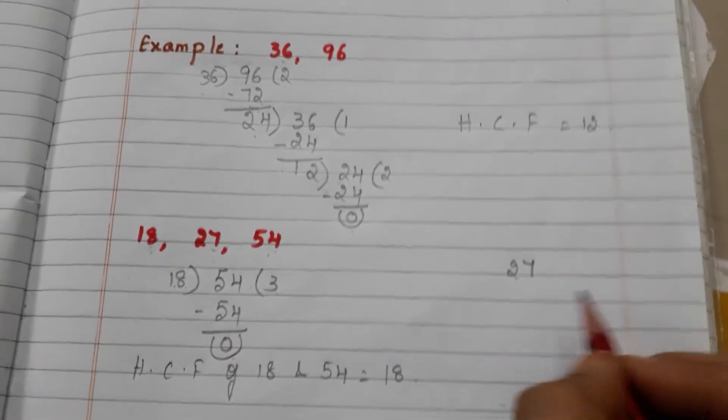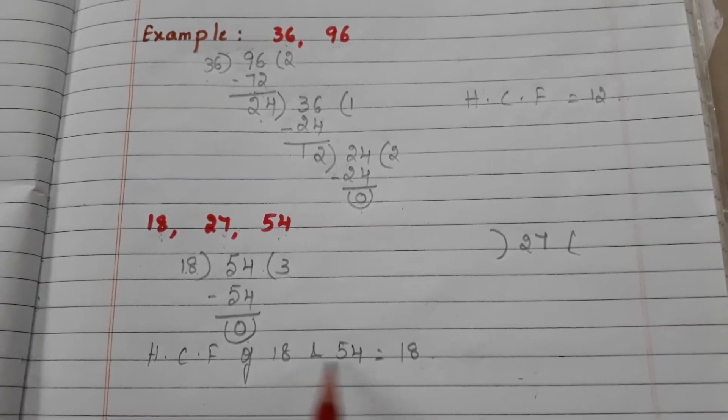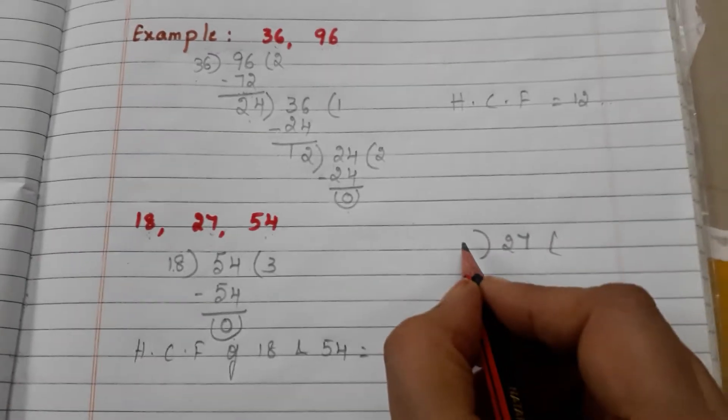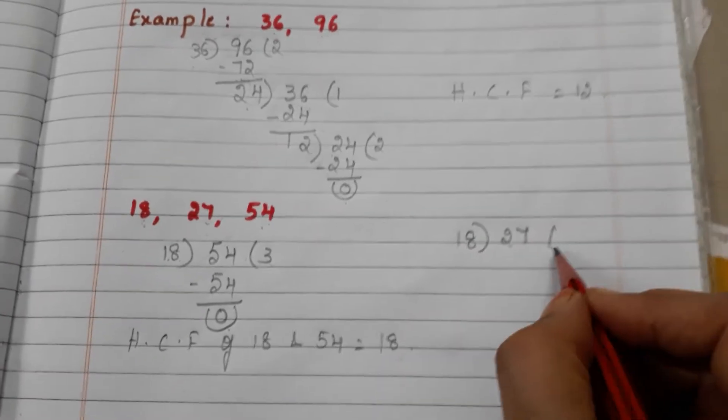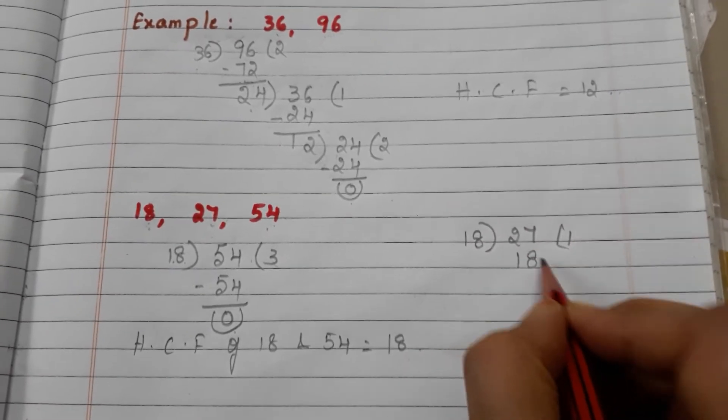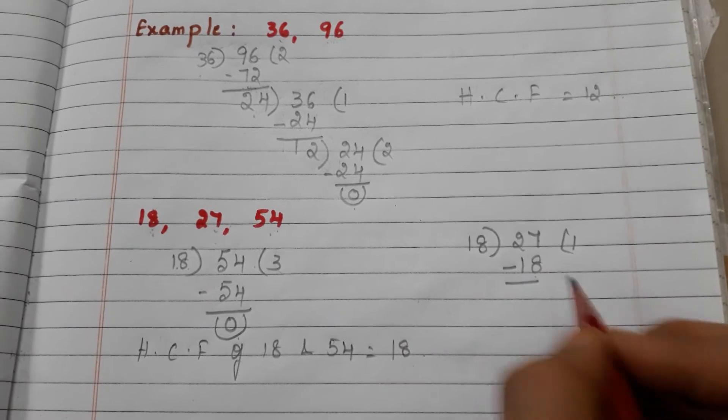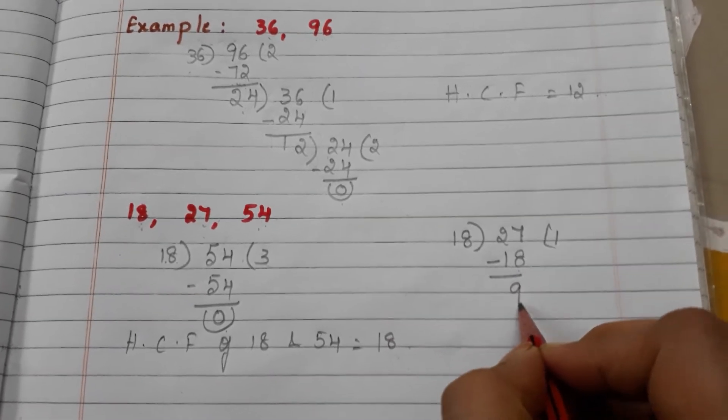Here the divisor becomes the HCF of two numbers 18 and 54, so 18 is the divisor. Now we take 27 and divide by 18. 18 one is 18, 27 minus 18 is 9. So we have remainder 9.